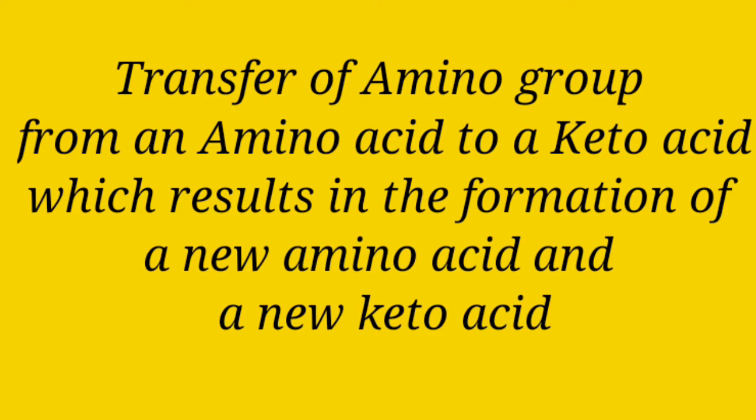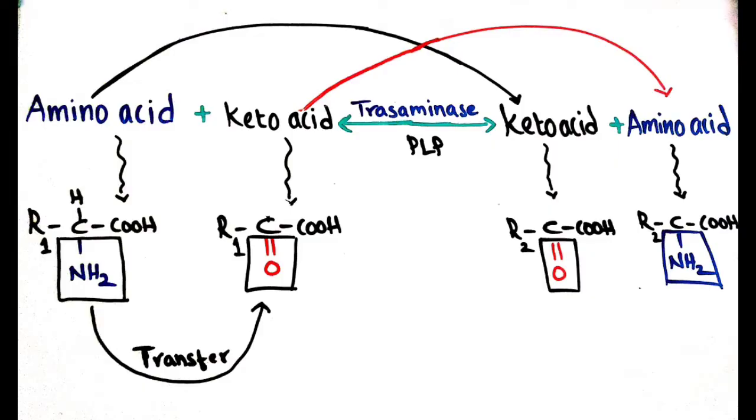Transamination can be defined as the transfer of an amino group from an amino acid to a keto acid, which results in the formation of a new amino acid and a new keto acid. So in this mechanism, the transfer of amino group happens.